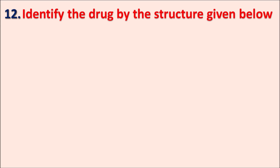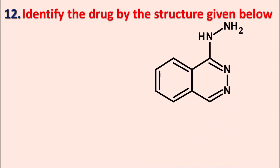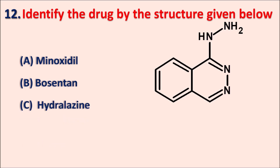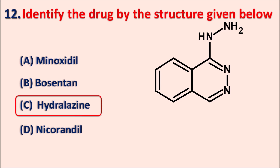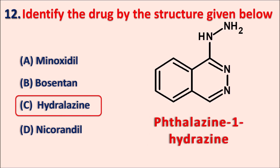Question twelve: Identify the drug by the structure given below. The options are A: minoxidil, B: bosentan, C: hydralazine, and D: nicorandil. This structure contains a hydrazine functional group, and the vasodilator containing hydrazine is hydralazine. Hydralazine has a hydrazine group attached to a phthalazine ring system - it is phthalazine-1-hydrazine. So hydralazine is a vasodilator containing the hydrazine moiety.